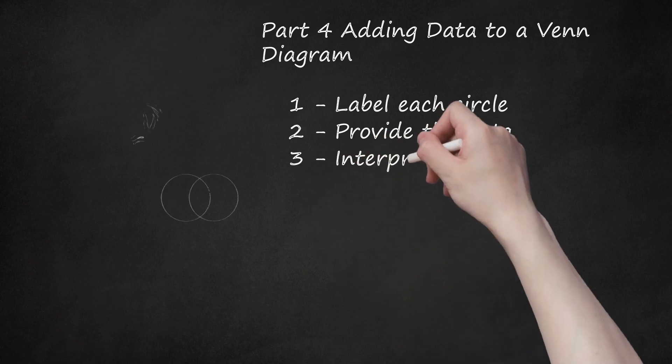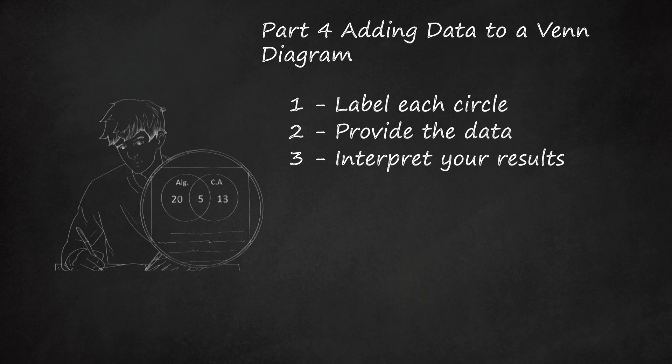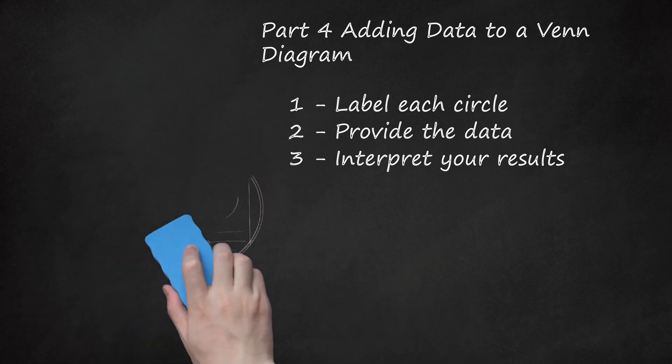Step 3: Interpret Your Results. The word problem mentioned above asks the reader to solve for a specific value, but not all Venn diagrams require the reader to provide an exact answer. Often, the purpose of the diagram might be to organize thoughts on a complex topic or help with decision-making. Depending on what type of comparison is being made, the results and how to interpret them will vary.